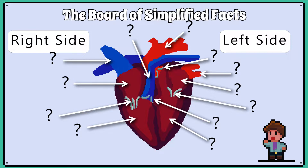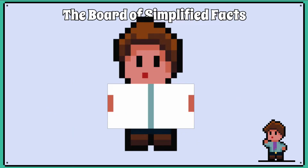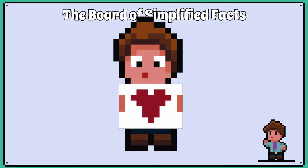And remember, when looking at a diagram, you must remember that the right side appears on the left side of the paper. Just flip the paper and hold it against your heart and you can identify which side is left and which is right if you are not sure.